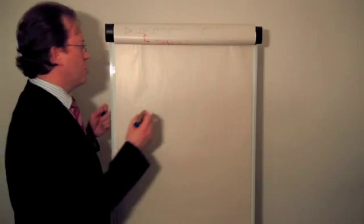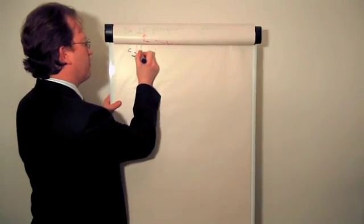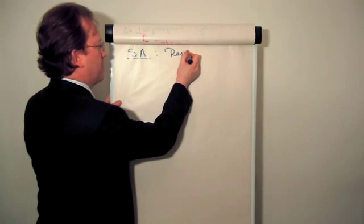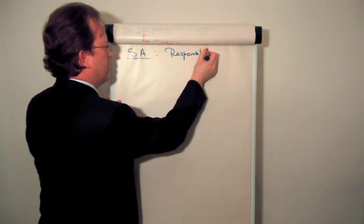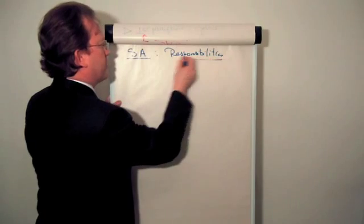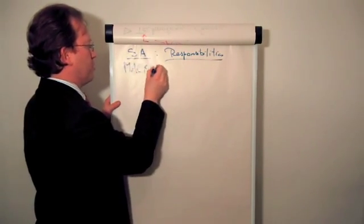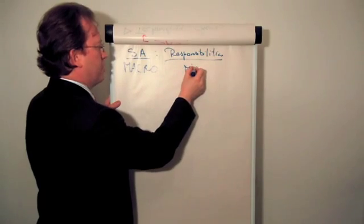So the first thing you have to know is that when you do software architecture, you think about responsibilities. And this, it is right here. And responsibilities work at the macro, but also work at the micro levels.